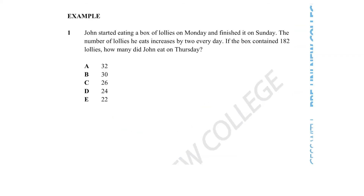The example question we will be looking at provides the following. John started eating a box of lollies on Monday and finished it on Sunday. The number of lollies he eats increases by 2 every day. If the box contained 182 lollies, how many did John eat on Thursday? The options are: A) 32, B) 30, C) 26, D) 24, or E) 22.